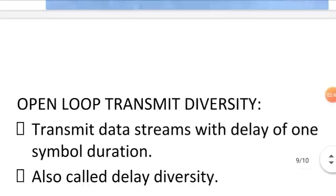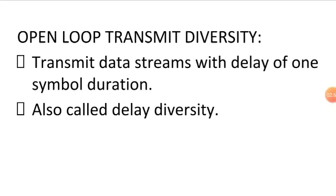Open loop transmit diversity. Here, we transmit data streams with the delay of one symbol duration from each of the transmit antennas. This is also called as delay diversity.